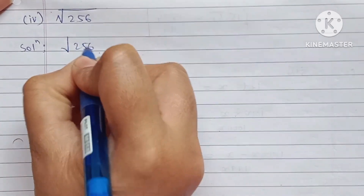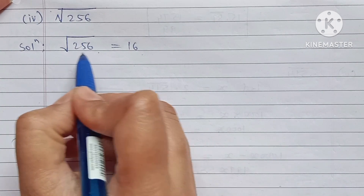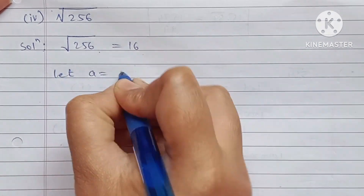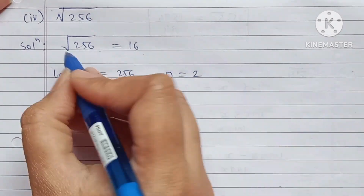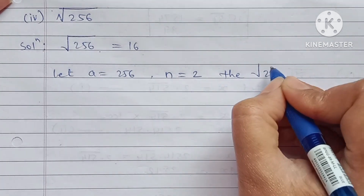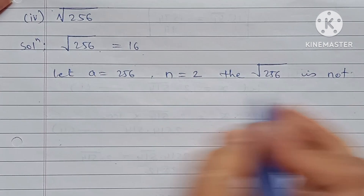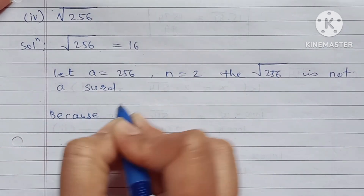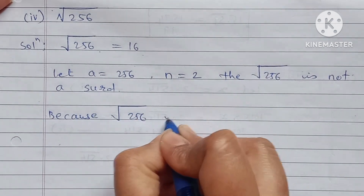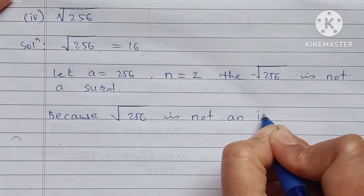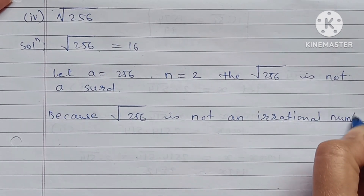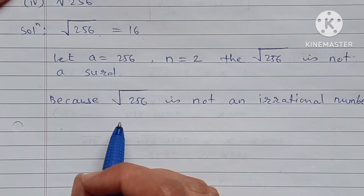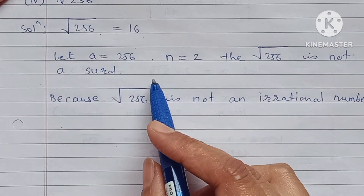256 is the square of 16. So square root of 256 equals 16. Let a = 256 and n = 2, then square root of 256 is NOT a surd — because square root of 256 is not an irrational number; it equals 16, which is rational.